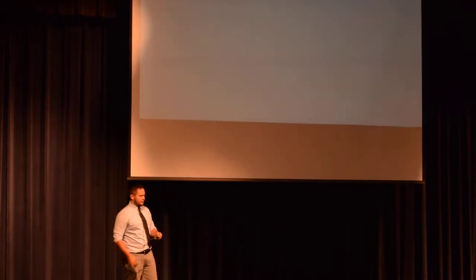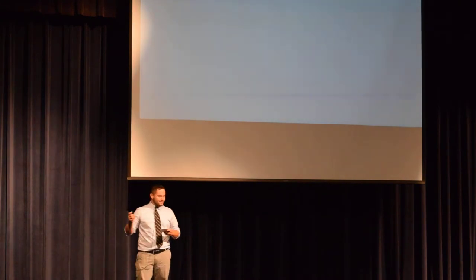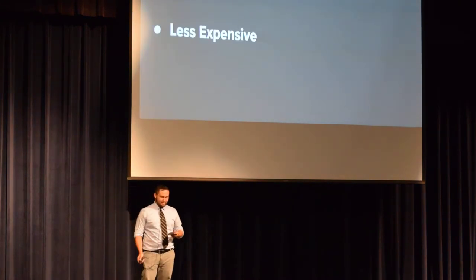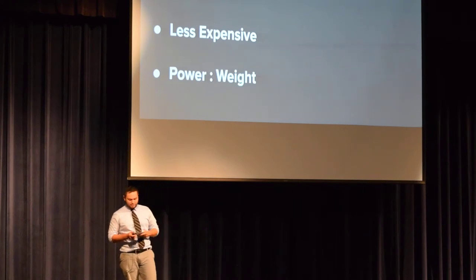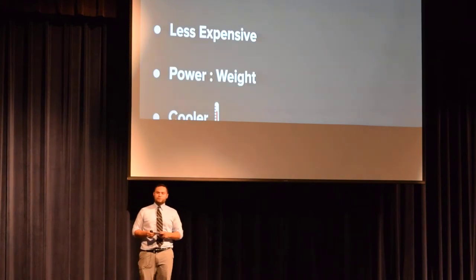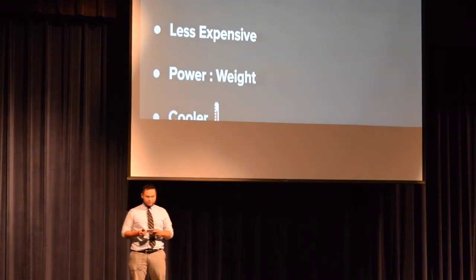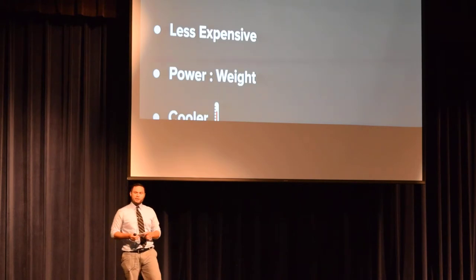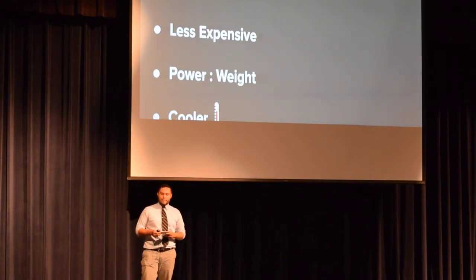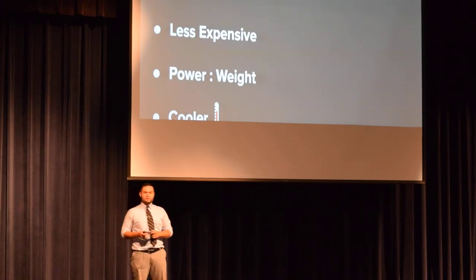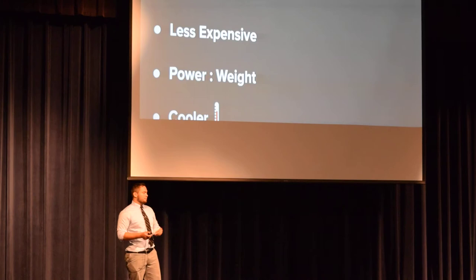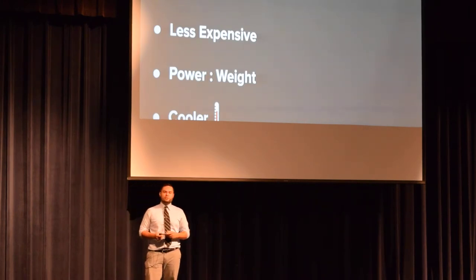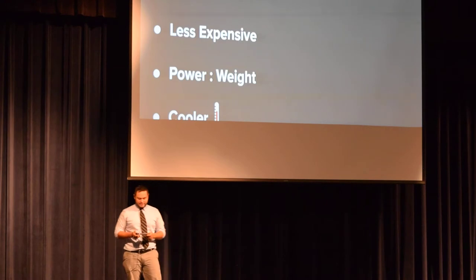Two-stroke engines are lighter, simpler, less expensive to manufacture, and have really good power-to-weight ratios compared to four-stroke designs. They also run a lot cooler. Three out of the four strokes in a four-stroke engine involve really hot processes: compression heats up, combustion is super hot, and the exhaust is just pushing out hot air. Each new charge in a two-stroke engine actually cools off the chamber. Often the top of the cylinder is exposed to the air — that's why you'll see metal ridges on dirt bikes or snowmobiles, which dissipate the heat into the air.